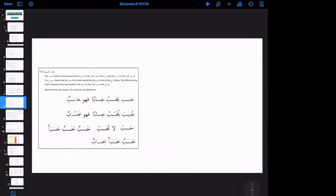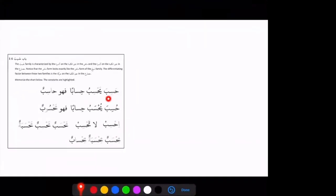Now we have Hasiba. Hasiba, again, looks like the same in our Madi. It is taking E sound. Hasiba. But in Mudariya it is still taking E sound. So Hasiba, Yahsibu. So Hasiba, it is rhyming with Samia in Madi, but Mudariya is different. So Yahsibu. Then Hisaban, Fahuwa Hasibun. Husiba, Yuhsabu, Hisaban, Fahuwa Mahsubun.